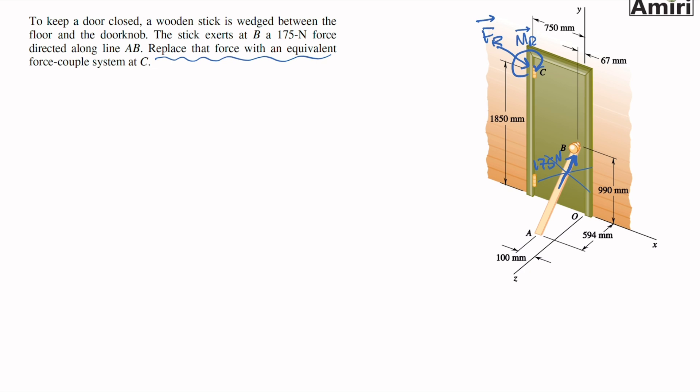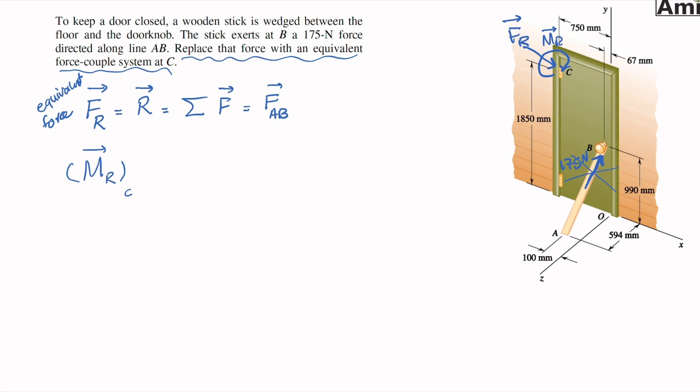In this problem, let's start with basics. The major equation of equivalent force, sometimes shown as R vector, is summation of all forces on the problem. In this case we just have one F, we can call it FAB. The equivalent force is summation of all forces in vector form that are present here.